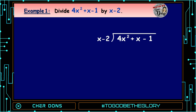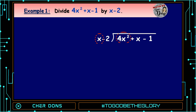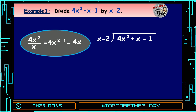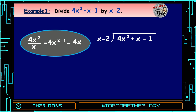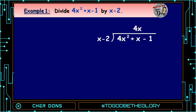Step 2: Divide the first term of the dividend by the first term of the divisor. So, 4x² divided by x, or x raised to 1, is equal to 4x raised to 2 minus 1, which equals 4x. So 4x is the first term of the quotient.